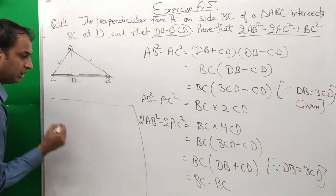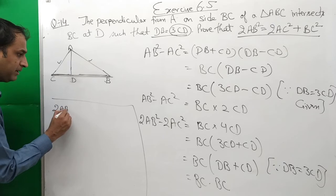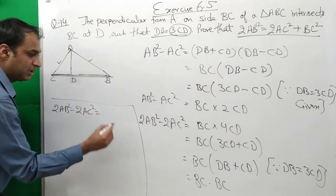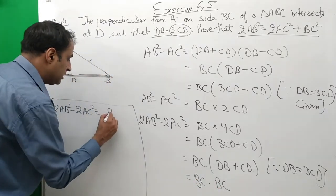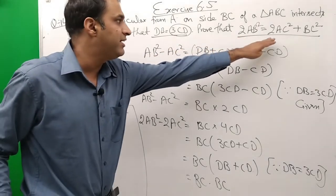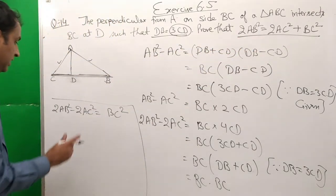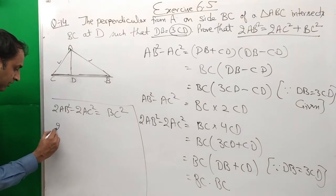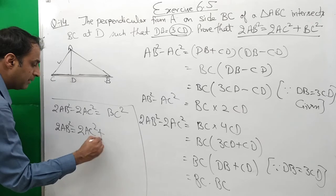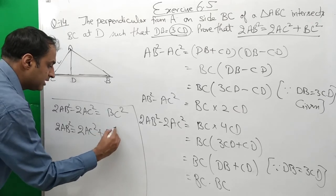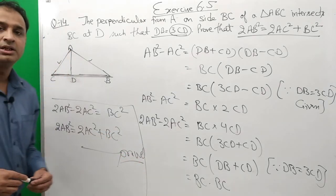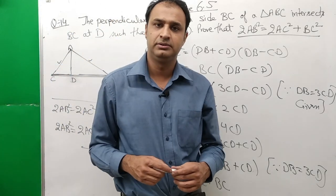So we get 2AB² − 2AC² = BC². Rearranging, 2AB² = 2AC² + BC². And this is exactly what we had to prove. Hence proved.